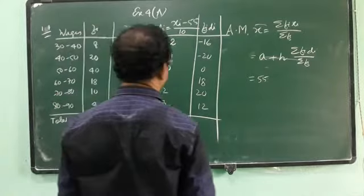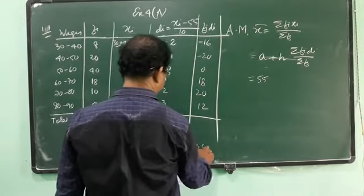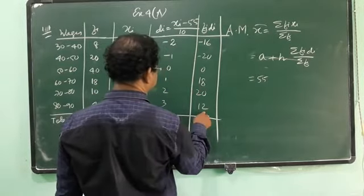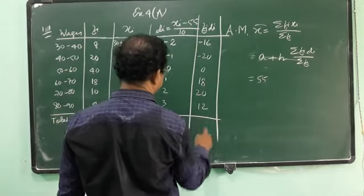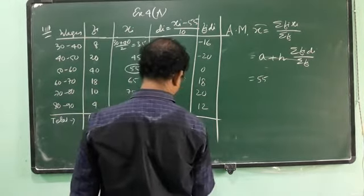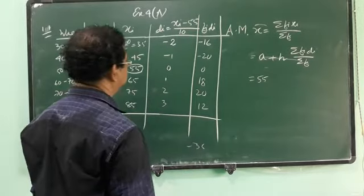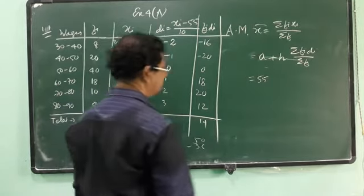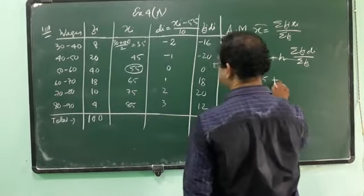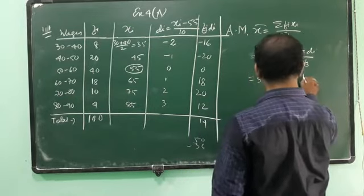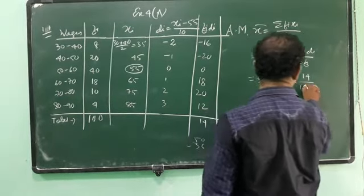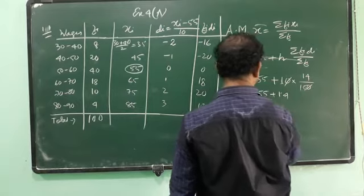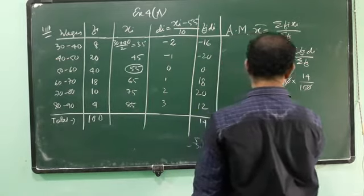So students, it is minus 36, and here 18, 20, 30, 40. That is 50 minus 36, so of course it is 14. So we can write it is 55 plus 10 into, summation fi di is 14, summation fi we have calculated is 100. So we get 55 plus 0.14, so it is 55.14 is the value. Of course you have to give units, and this one is rupees.